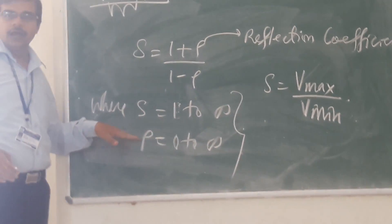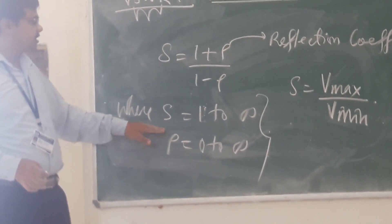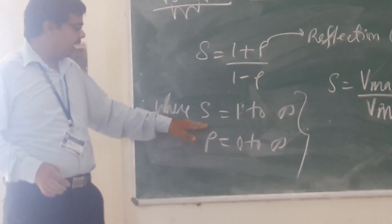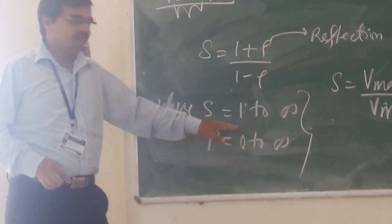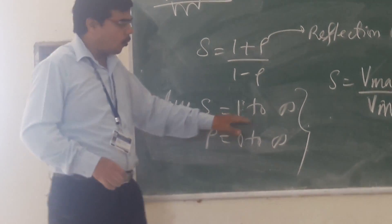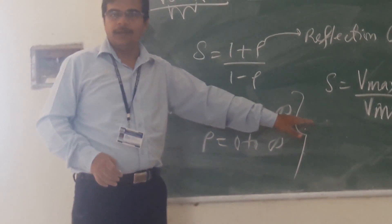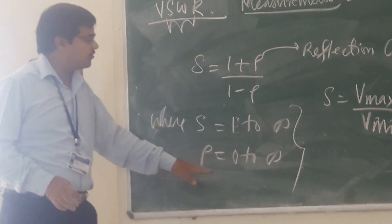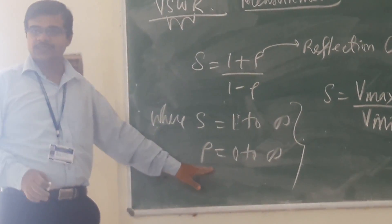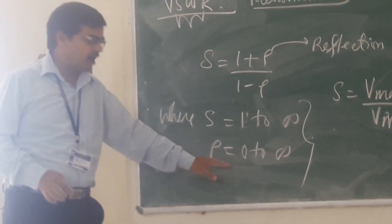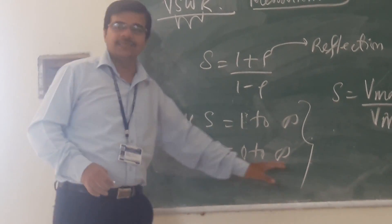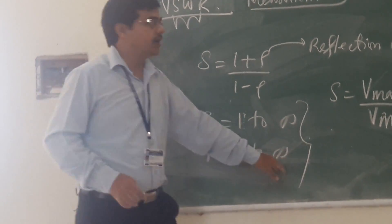If you are seeing the standing wave ratio, S is varying from 1 to infinity. Whereas if you are taking your reflection coefficient, the reflection coefficient is varying from 0 to 1. We can also write S equals 1 plus rho by 1 minus rho, where rho is your reflection coefficient.